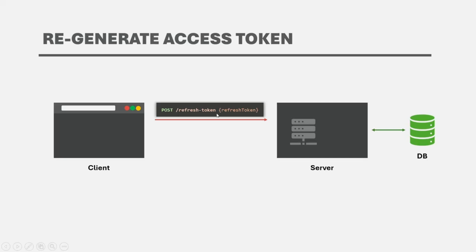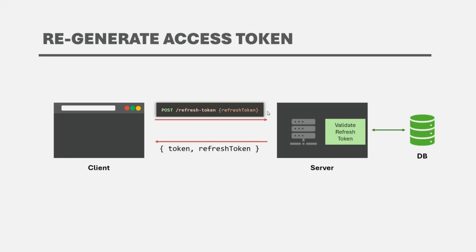This request will be made to an endpoint called 'refresh token' — a custom name you can call anything, but we're calling it refresh token. A POST request will be made to this endpoint, and in that POST request, the refresh token will be passed as the request body. Once the refresh token is received on the server, the server will validate it. If the refresh token is valid, the server will generate a new access token and a new refresh token and send them in the response to the client. Every time the user needs to be re-authenticated automatically, a POST request will be sent to this endpoint with the latest refresh token, and again a new access token and refresh token will be created and sent back to the client.